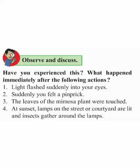First: light flashed suddenly into your eyes — dole avar acanak prakash padla thar kai ho ta? Second: suddenly you felt a pinprick — haat taat la acanak kundi tari chimta karla, thar kai ho ta? Third: the leaves of the mimosa plant were touched — lazarucha zhaadala apan touch kelo, kai ho ta? Fourth: at sunset, lamps on the street — divas mavaru lanan thar, aaplya rastya vachhe lights lapta, kai ho ta? Write your observations.